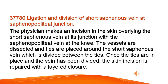Ligation and Division of Short Saphenous Vein at Saphenopopliteal Junction. The physician makes an incision in the skin overlying the short saphenous vein at its junction with the saphenopopliteal vein at the knee. The vessels are dissected and ties are placed around the short saphenous vein, which is divided between the ties. Once the ties are in place and the vein has been divided, the skin incision is repaired with a layered closure.